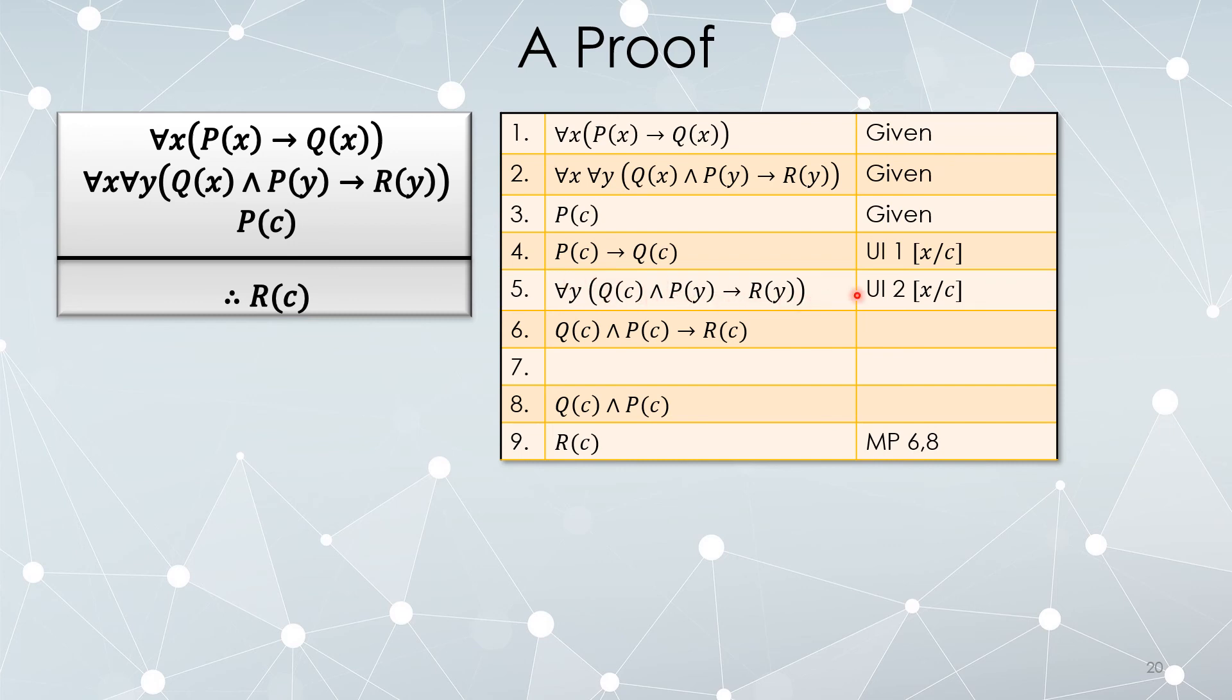This is first and foremost universal instantiation of x. So I'm replacing x with c. So we check two things. If I replace all the x's with c, I get for any y, Q(c) and P(y) implies R(y), which is right there. So I did indeed replace every instance of x with c and drop the universal quantifier. Did I use an allowable term? Yes. Remember, universal instantiation is totally open. You can use any term you want, which means you can use it more than once.